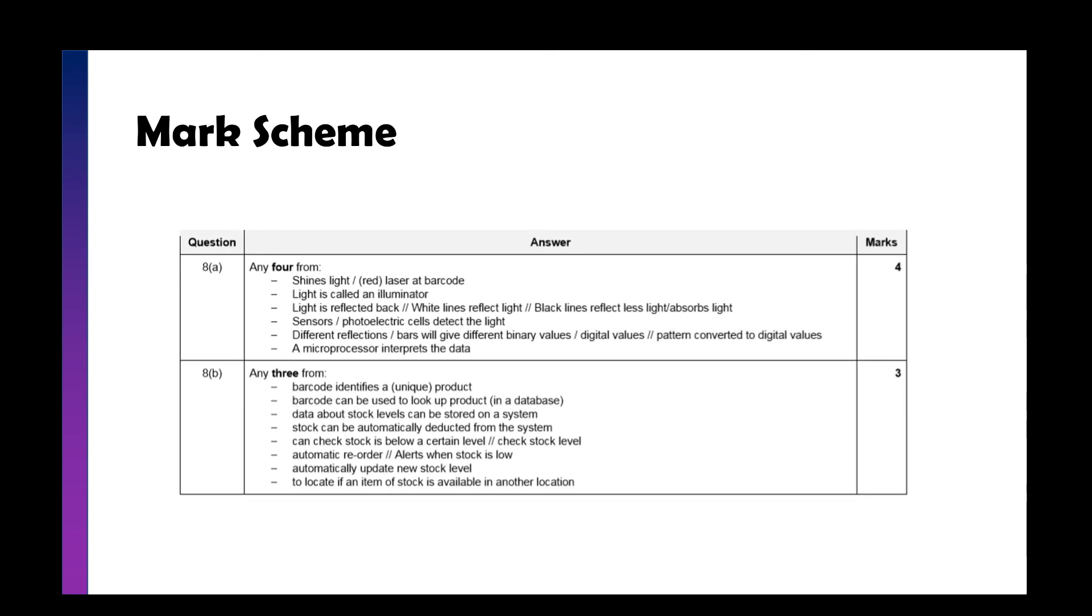So we take a look at the mark scheme on screen there. Shining a light. It's reflected back. Different reflections give different patterns. And the microprocessor interprets it. And for B, the barcode identifies a unique product. We look it up and look for the stock levels. They can be automatically deducted. And we can check when it's below a certain level and automatically reorder.